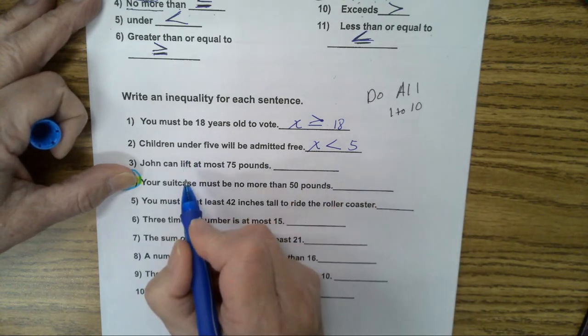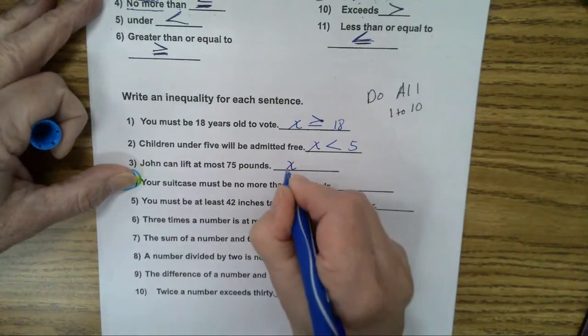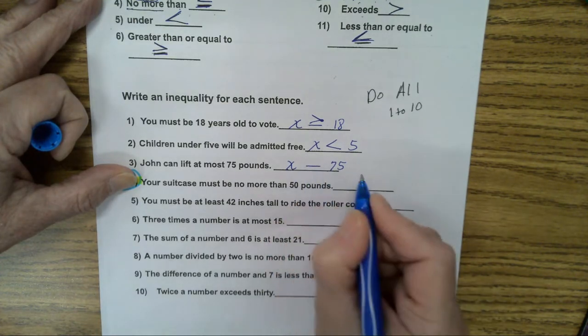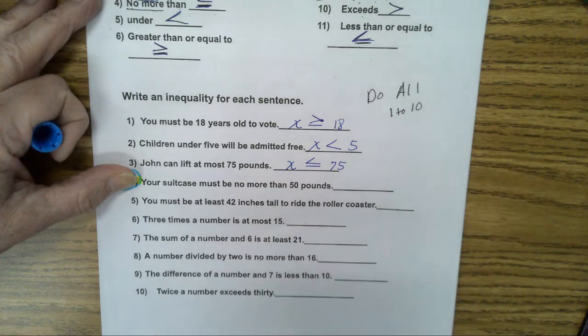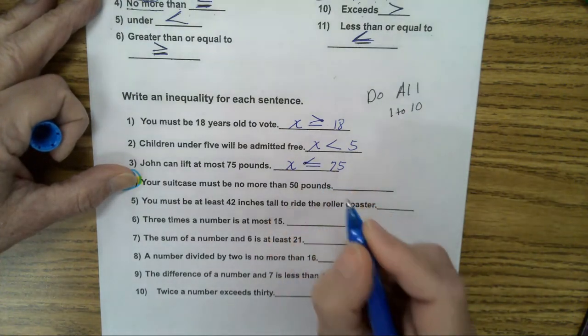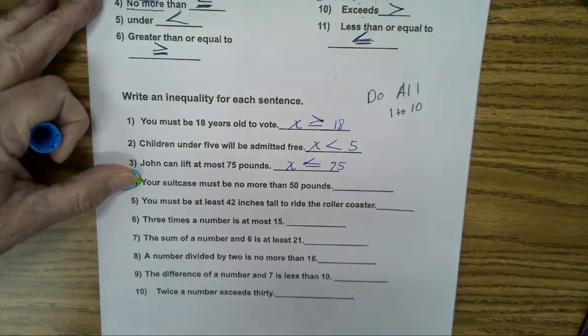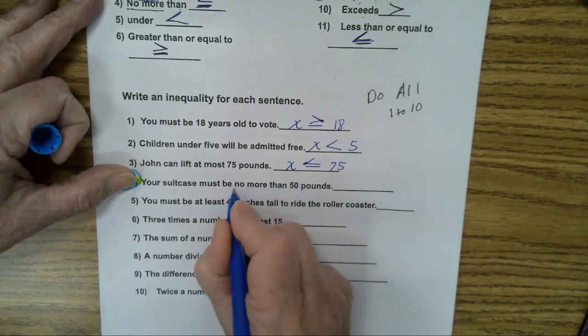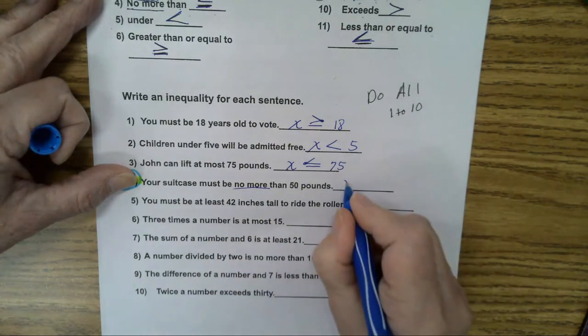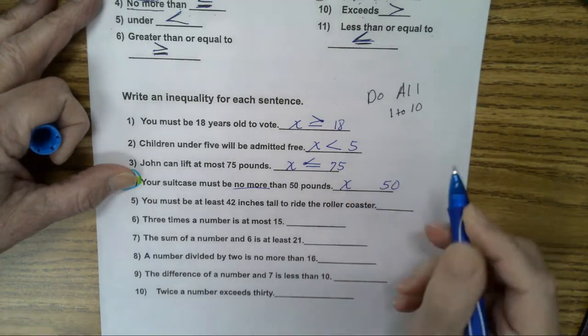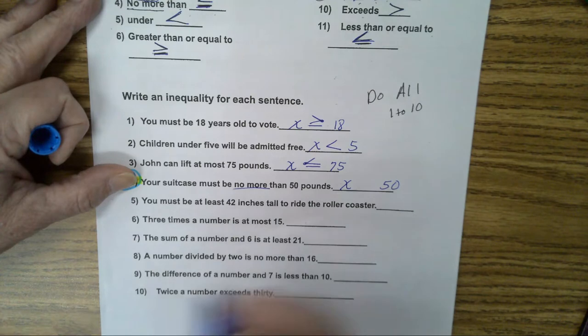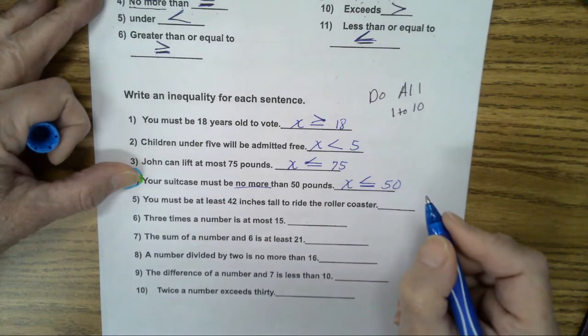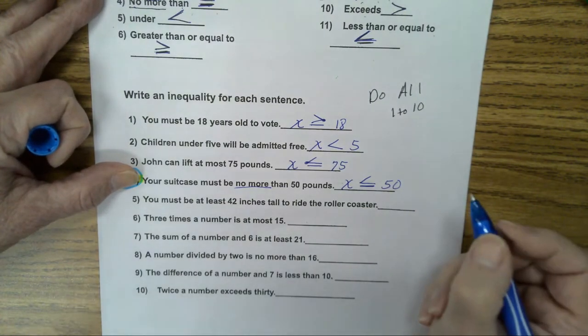John lift, at most, 75 pounds. Can he lift 75 pounds? Yes. Can he lift more than that? No. So it's 75 or smaller. These are not hard, but you've got to practice seeing them so you know what to write down. Your suitcase must be no more than 50 pounds. Can it be 50 pounds? Yes. Can it be more than 50 or less than 50? Less than 50. No more means less.